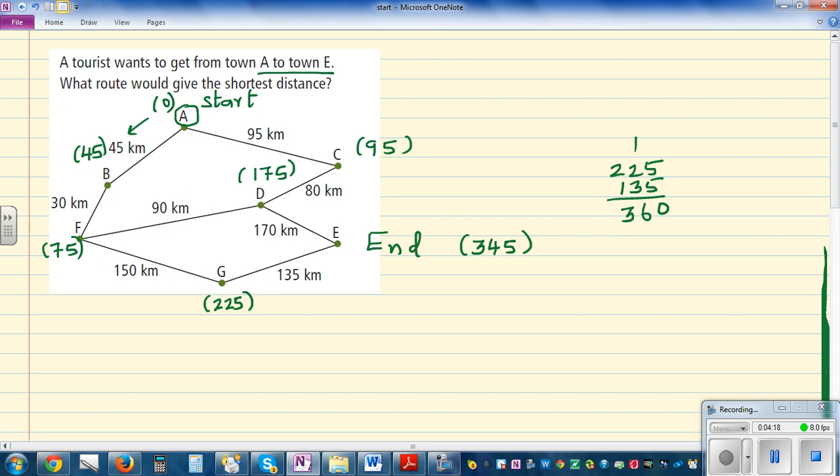345 is the shortest till now. What if you go from 75 plus 90? That is 165. So that is shorter. I'll cross that out. So this is 165. And 165 plus 170 is 235. So that is the shortest.